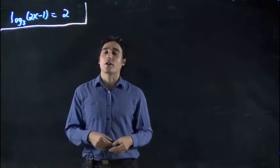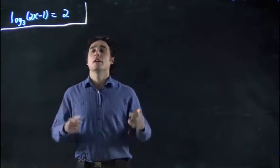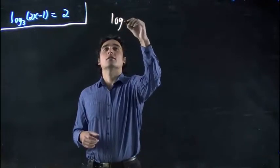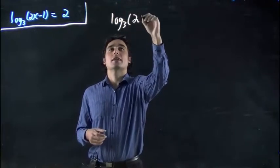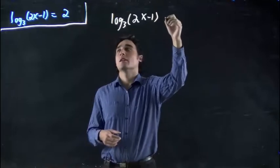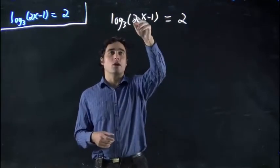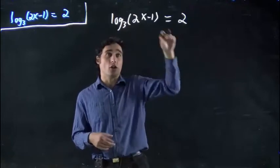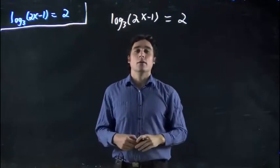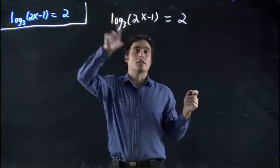Okay, we're looking at another logarithmic equation trying to solve it. In this case we have log to the base 3 of 2x minus 1, and all of that is equal to 2. So 2x minus 1 is in brackets, we're taking the log to the base 3 of all of that.